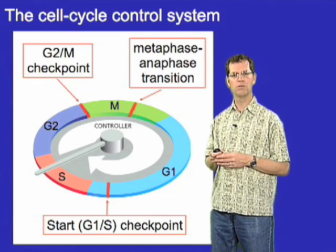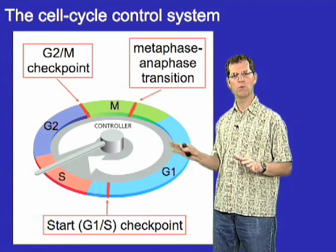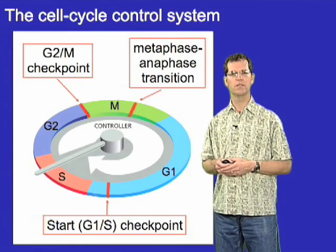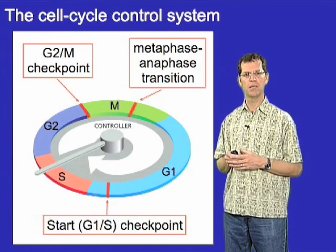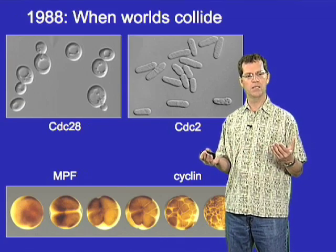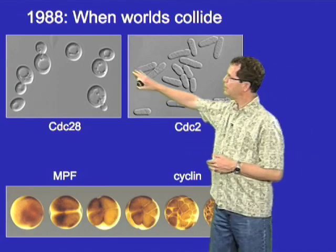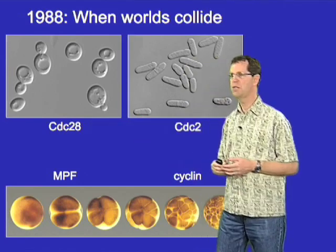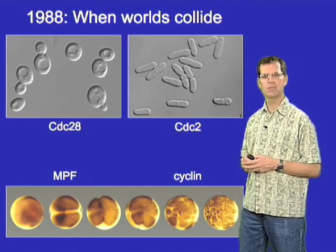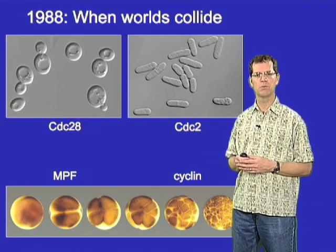The big question that has occupied many of us for the last 10 or 20 years has been understanding the molecular composition of this timer — what are the proteins that make up this regulatory system? The major breakthroughs arose from a combination of yeast genetics and biochemical studies in early embryonic cell types, which collided in the late 1980s. In budding yeast, a protein kinase called CDC28 was found to be required for entry into the cell cycle; in fission yeast, a highly related protein kinase called CDC2 was identified that was required for progression into mitosis. These two protein kinases appeared to be homologues of one another and were clearly crucial regulators of cell cycle progression.